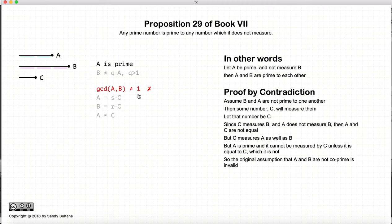So our original assumption that A and B were not relatively prime is incorrect, which leads us to conclude that A and B are relatively prime. So to recap: if A is prime, and A does not measure B, then A and B are relatively prime.